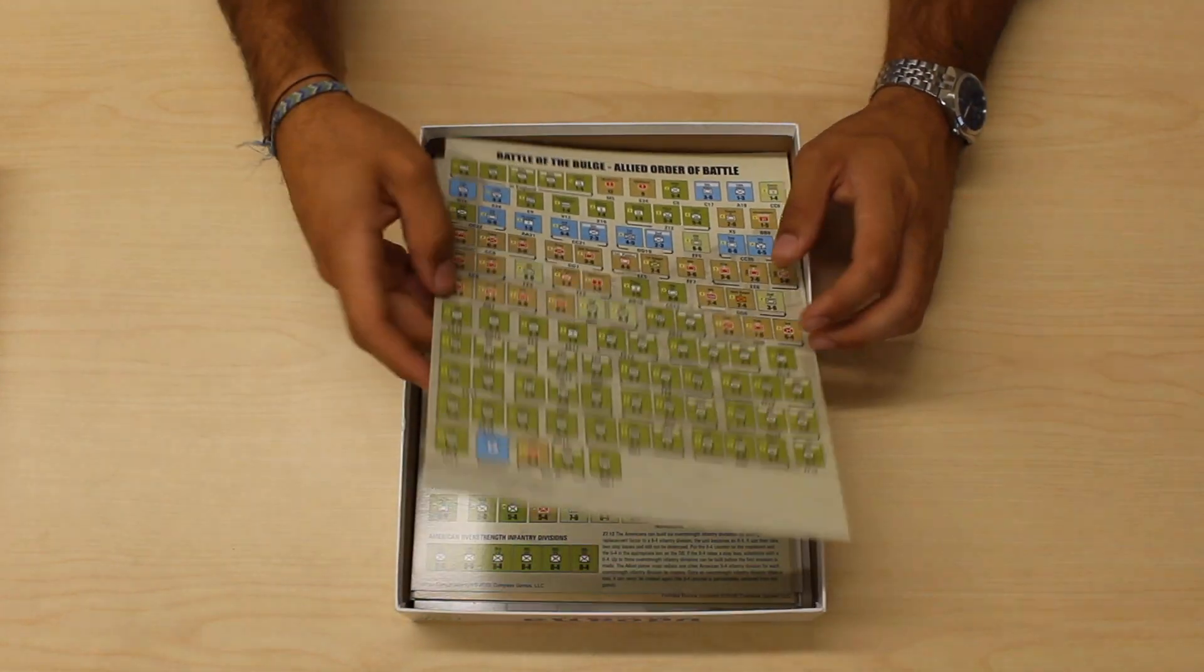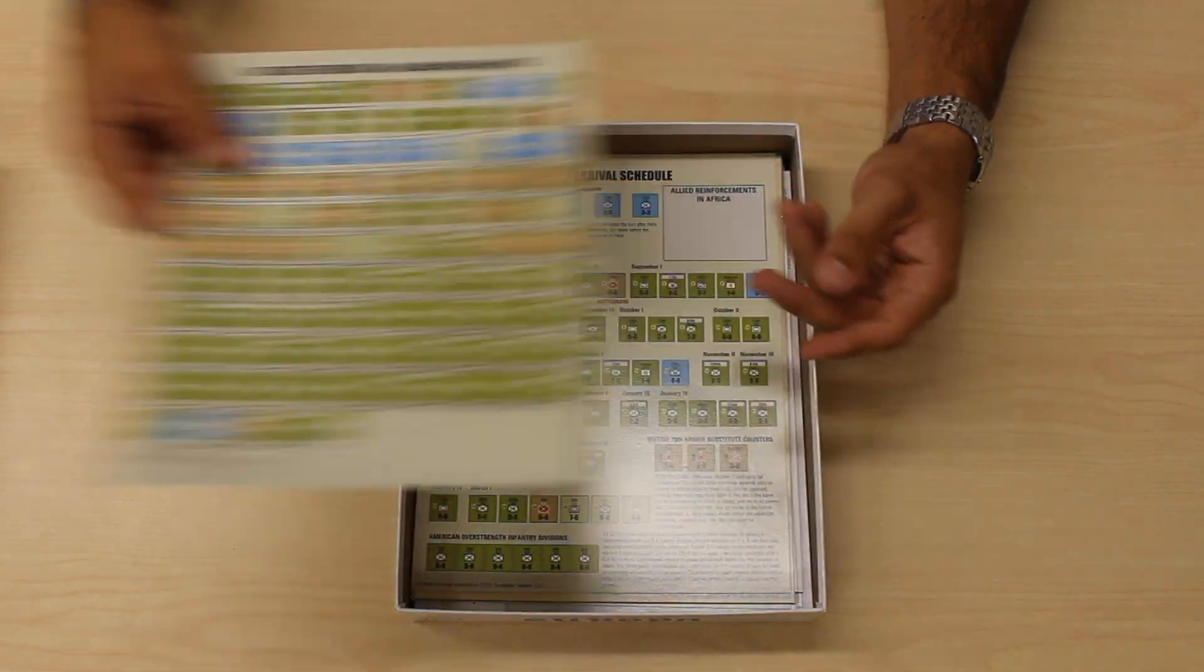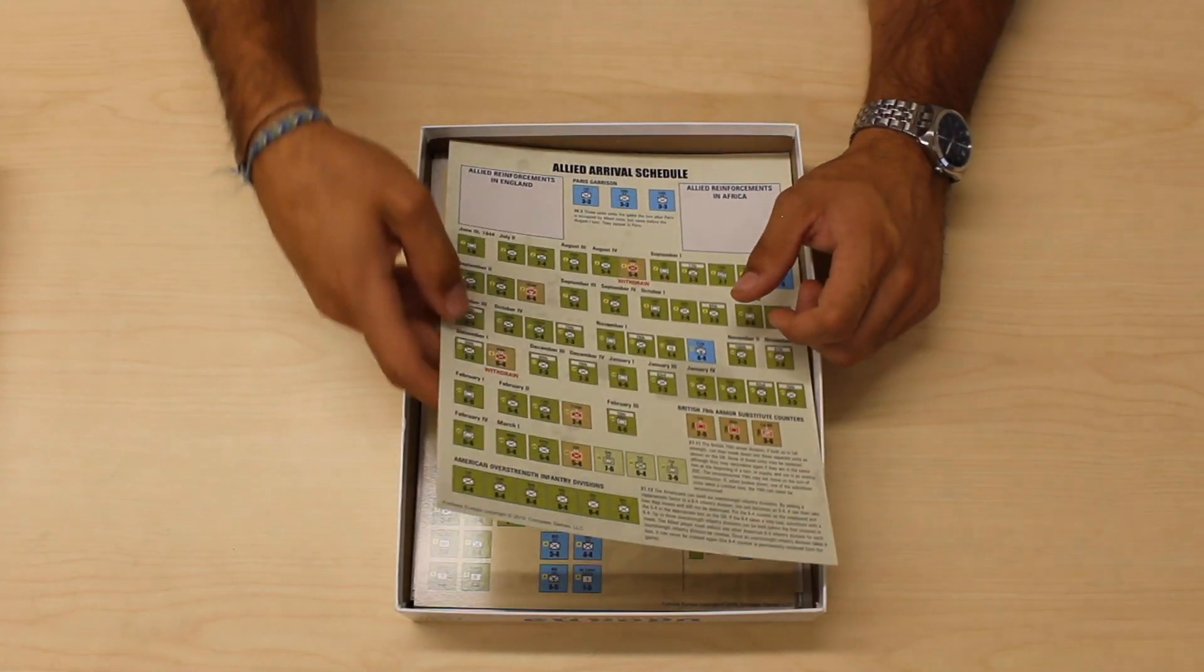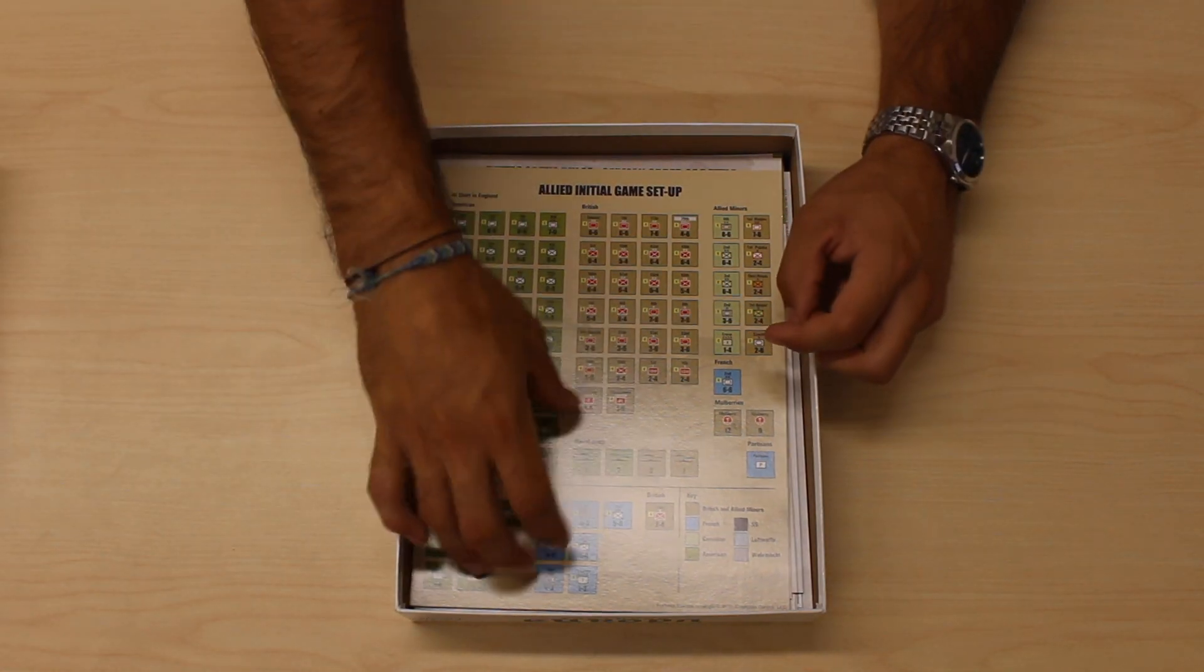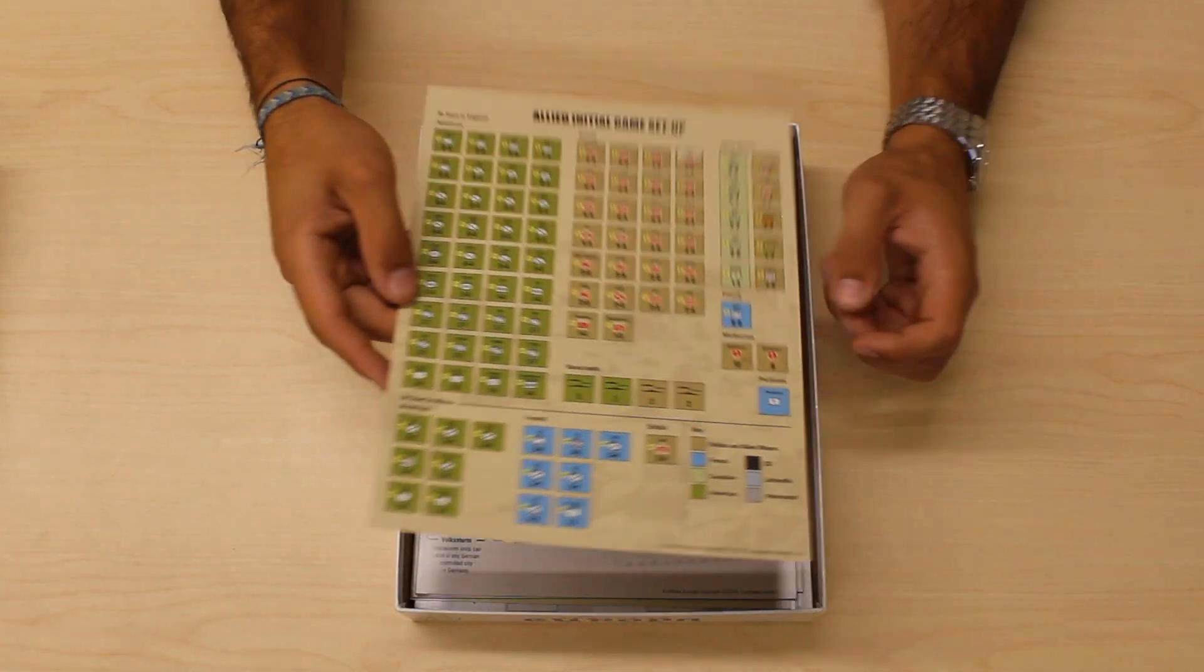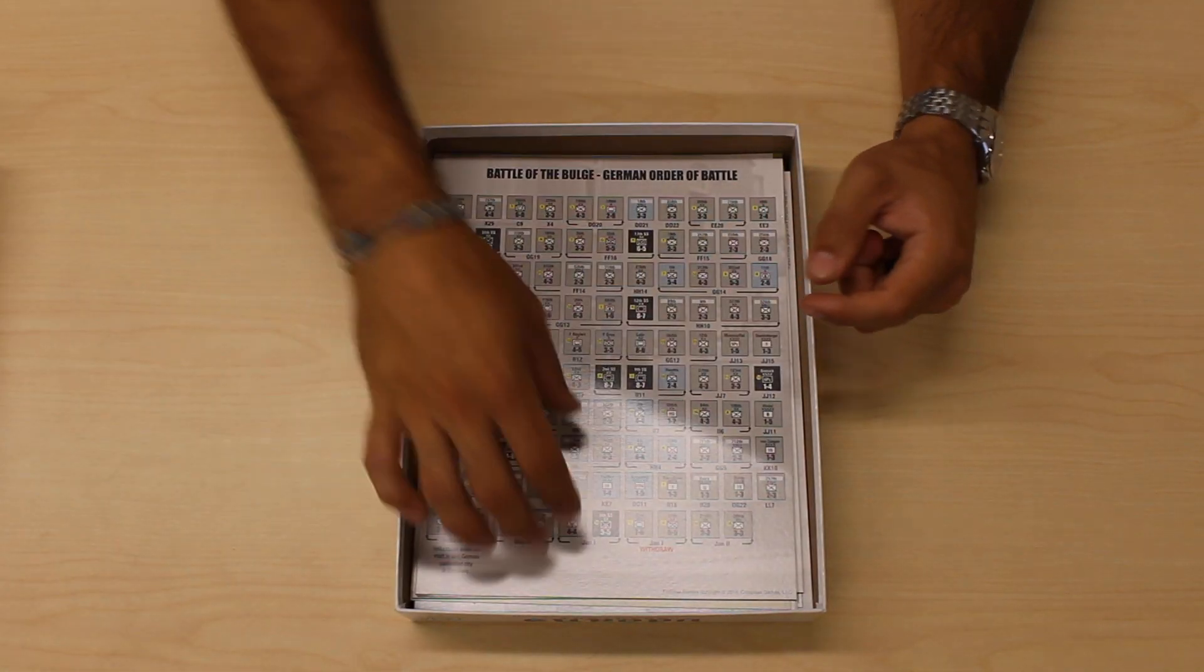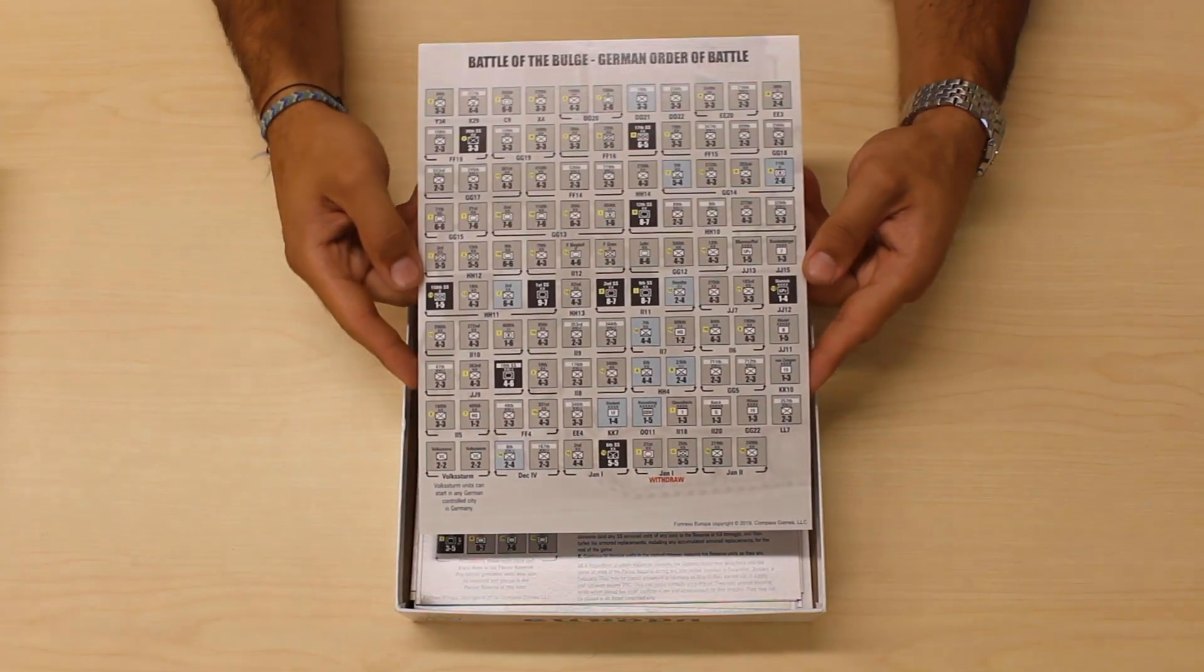We have one Allied Battle of the Bulge Order of Battle Display, one Allied Arrival Schedule Display, one Allied Initial Game Setup Display, and one German Battle of the Bulge Order of Battle Display.